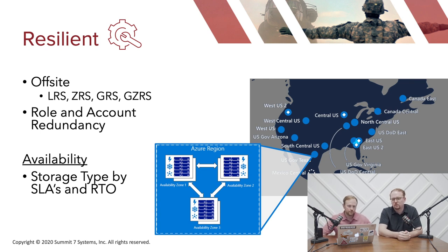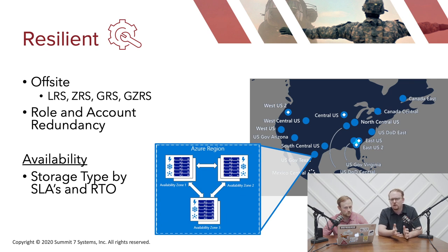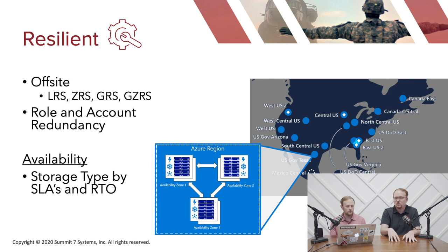Azure offers several storage redundancy options. LRS (Locally Redundant Storage) stores your data within a single Azure data center — in Azure Government, that could be Virginia or Texas. ZRS (Zone Redundant Storage) replicates data across multiple data centers within a region, within roughly a 50-100 mile radius. GRS (Geo-Redundant Storage) actually moves a copy from one Azure region to another — for example, from USGov Virginia to USGov Arizona or Texas, providing geographical separation.